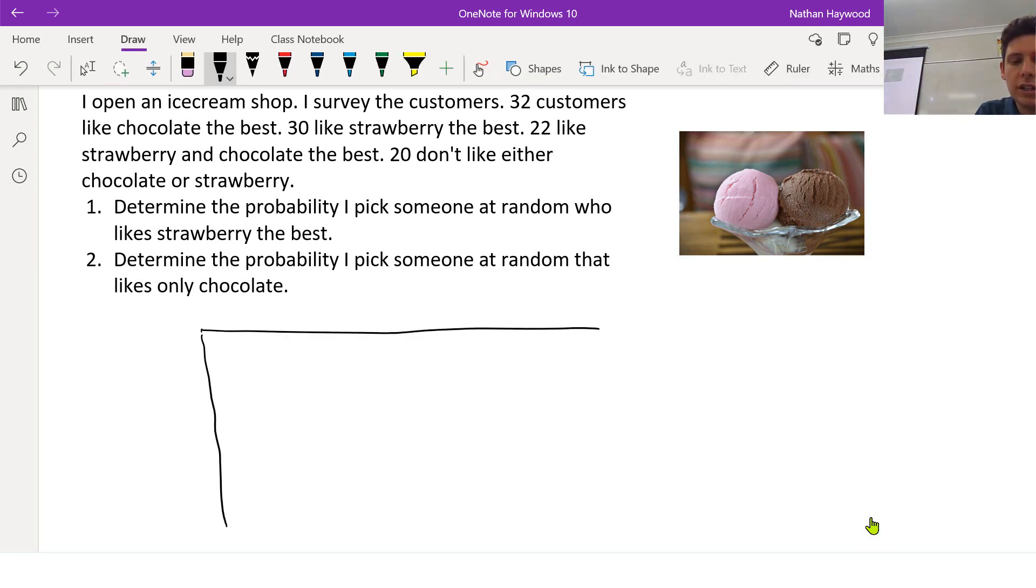So in case you forgot, a Venn diagram, you have a rectangle and there's two events that could happen. It could be event A or event B. A is they like strawberry the best. B is they like chocolate the best.